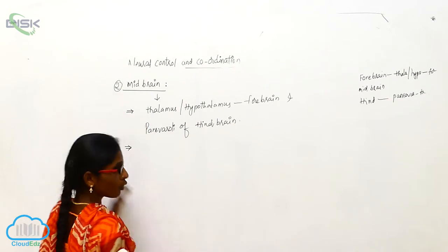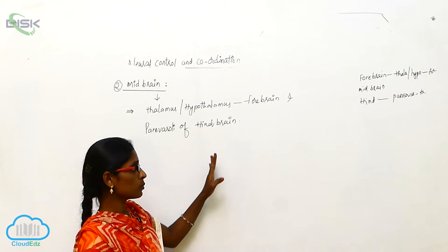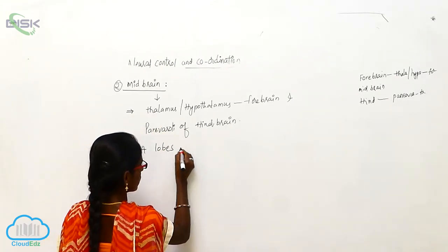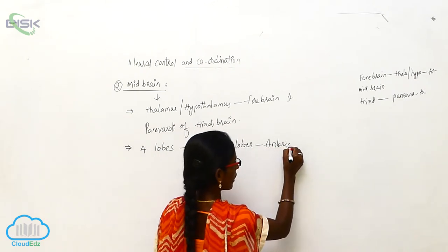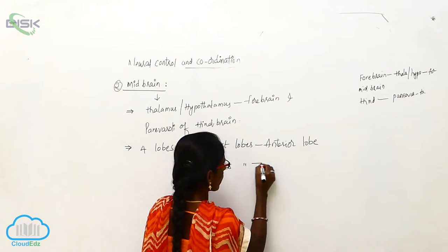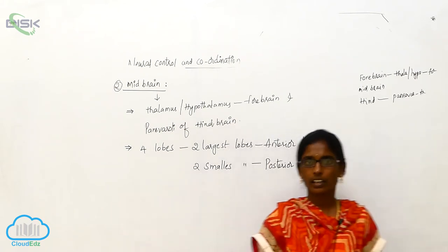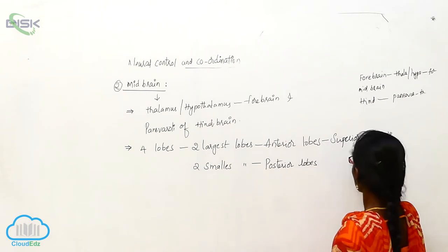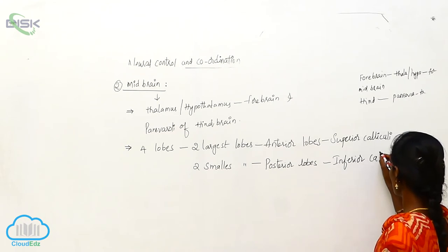The midbrain consists of four lobes: two largest lobes called anterior lobes, also known as superior colliculi, and two smallest lobes called posterior lobes, also known as inferior colliculi.